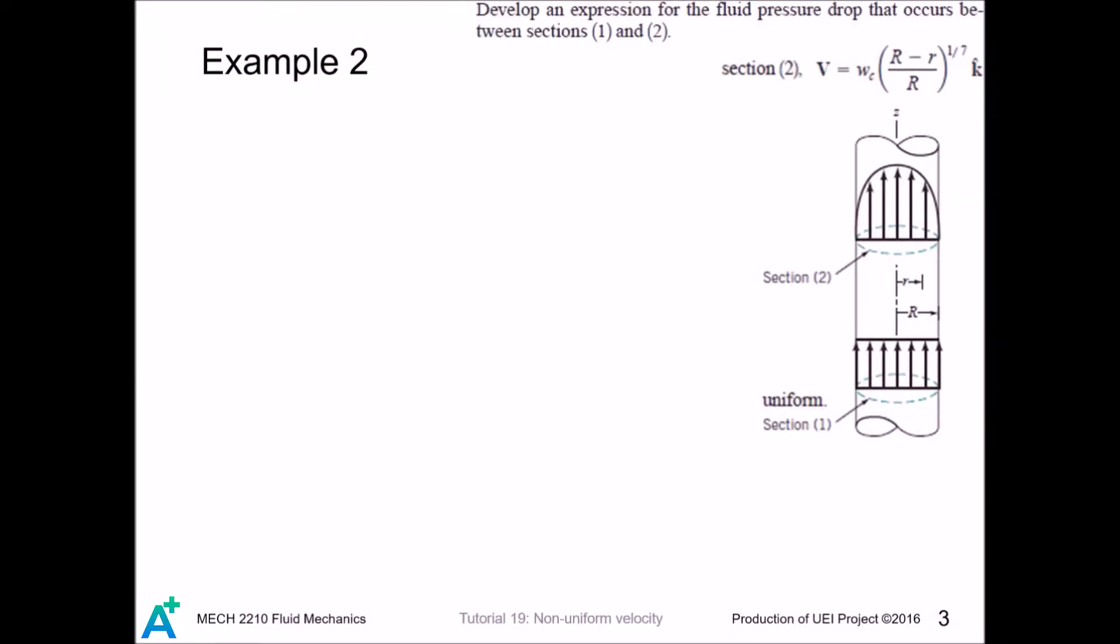Now we enter the focus of today. For such a non-uniform velocity profile, we cannot pull out the velocity as constant as we did in the previous two videos. So let's see how we can apply the linear momentum equation for such a velocity profile. Let's let the velocity at section 1 as w1.